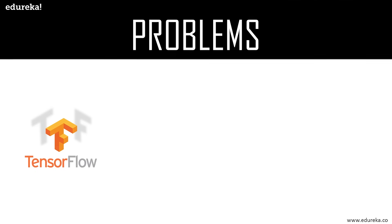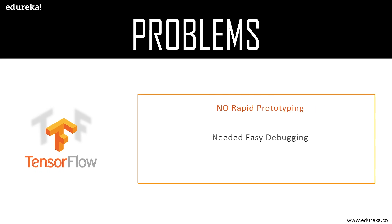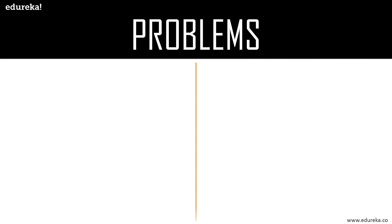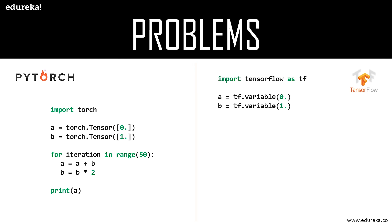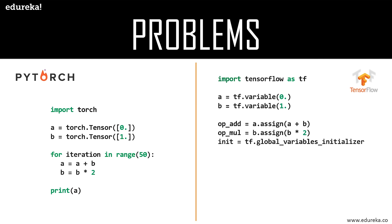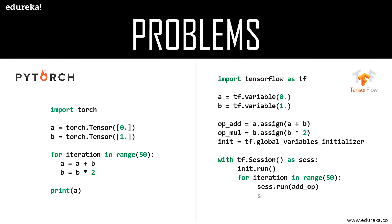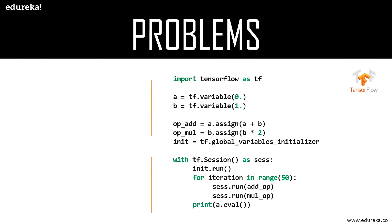Let's have a look at a few of the shortcomings or problems that people faced earlier. One of the problems was that they needed rapid prototyping, easy debugging, and there was a lot of clutter. Let's take an example of a small code for a geometric series sum. In PyTorch, which is another deep learning framework, it's basically seven or eight lines of code — very small — while the same code in TensorFlow would look much lengthier and harder to understand.